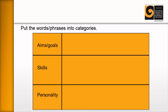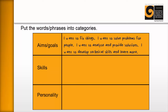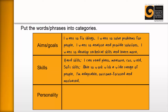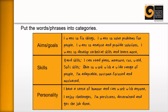I might ask them: what are your aims and goals? They might say things like, I want to fix things, I want to solve problems for people, I want to analyze and provide solutions, I want to develop technical skills and learn more. That goes into aims and goals. For skills, I sometimes discriminate between hard and soft skills. Hard skills: I can read plans, I can measure, cut, weld, bore, and so on. Soft skills: I'm able to work with a wide range of people, I'm adaptable, outcomes focused, motivated. For personality, they might say things like I have a great sense of humor, I can work with anyone, I enjoy challenges, I'm persistent, determined, and I can get the job done. And as you can see, here we have the raw material for our personal profile.